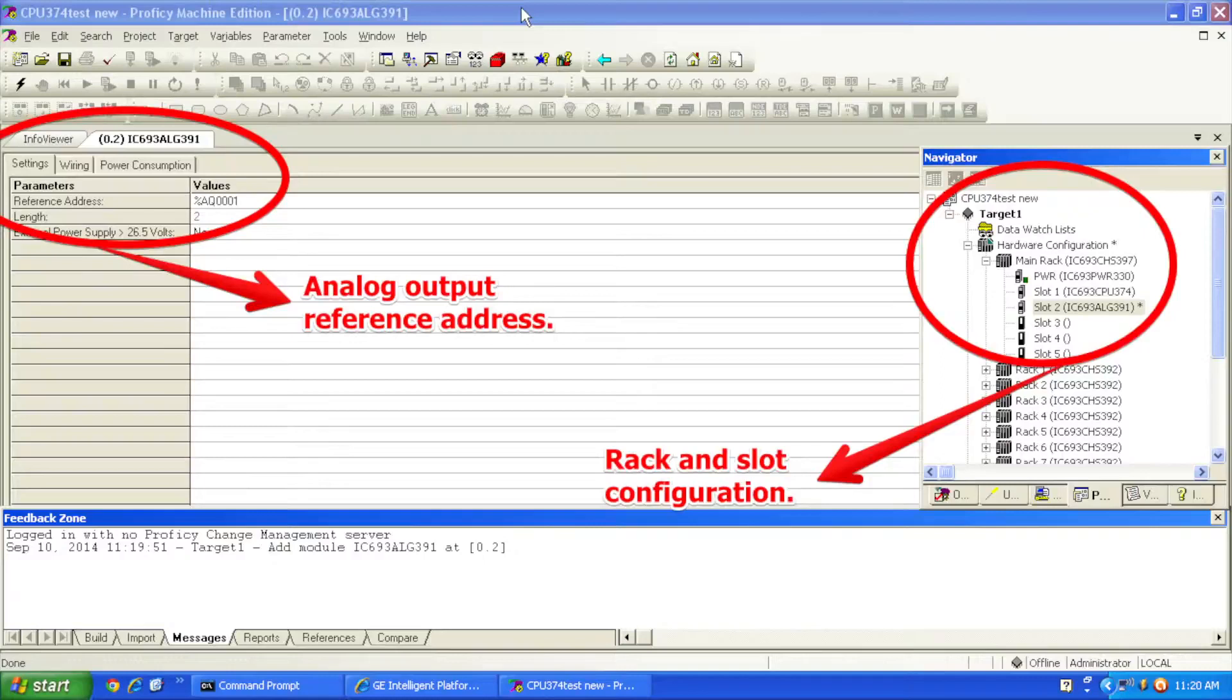The PWR330, CPU374, and in slot number two, the ALG391. Now when you configure the ALG391, you could double-click on slot number two or you can right-click on slot number two and select configure. And the tab should open up next to the info viewer that shows slot number two ALG391. The only thing that I wanted to point out here is the reference address.